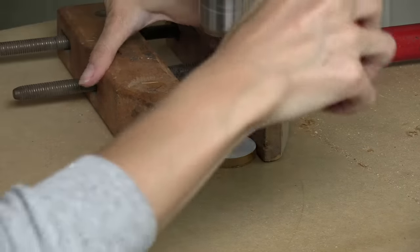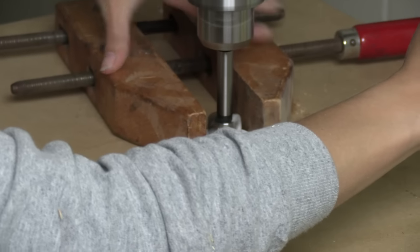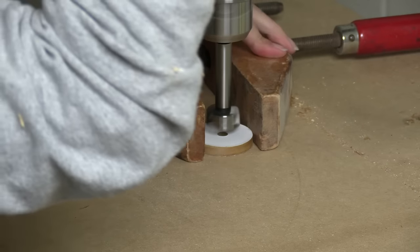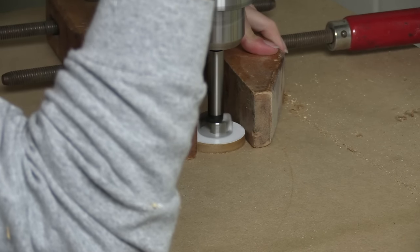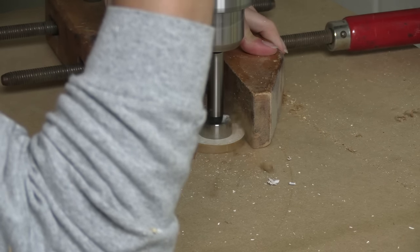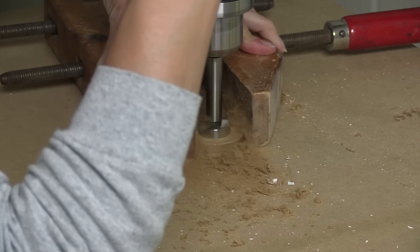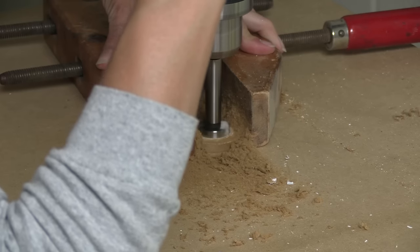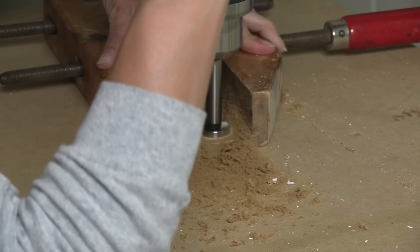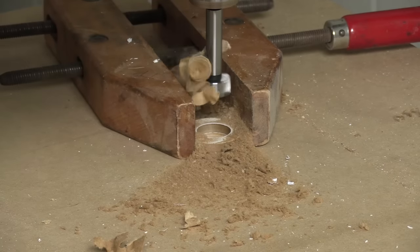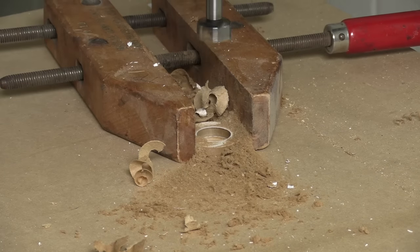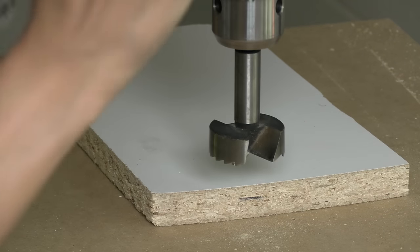To cut those clearance holes for the router bits, I will hold these little discs in a wood hand screw clamp so that my fingers aren't close to the drill bit and use a variety of different diameter Forstner bits to drill through the inserts so that I can fit all sorts of router bits with as little clearance around the router bit itself as possible.